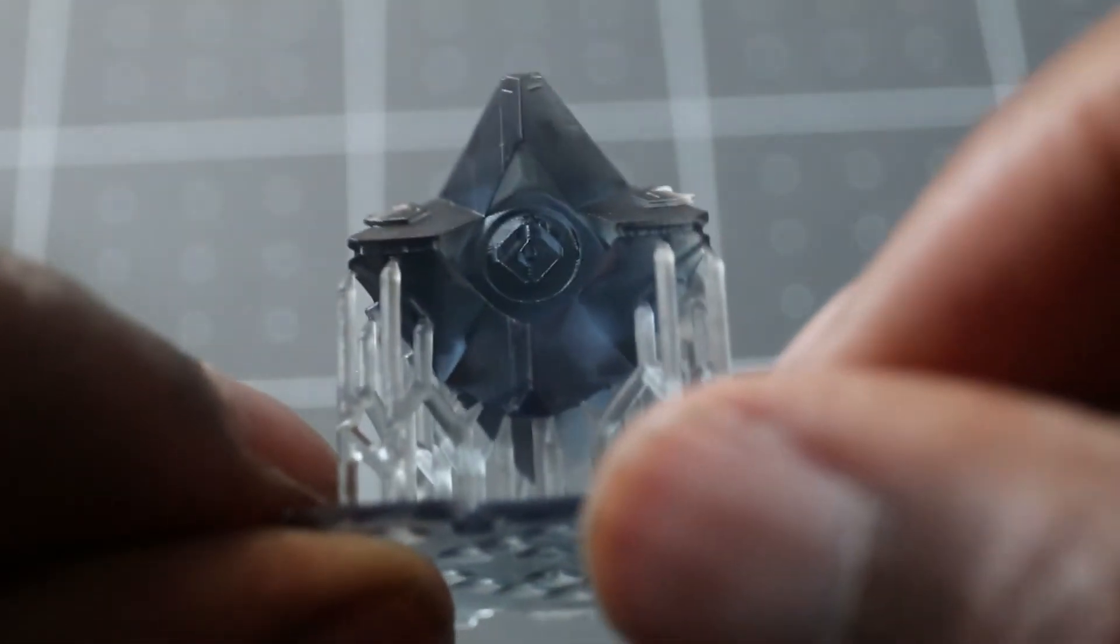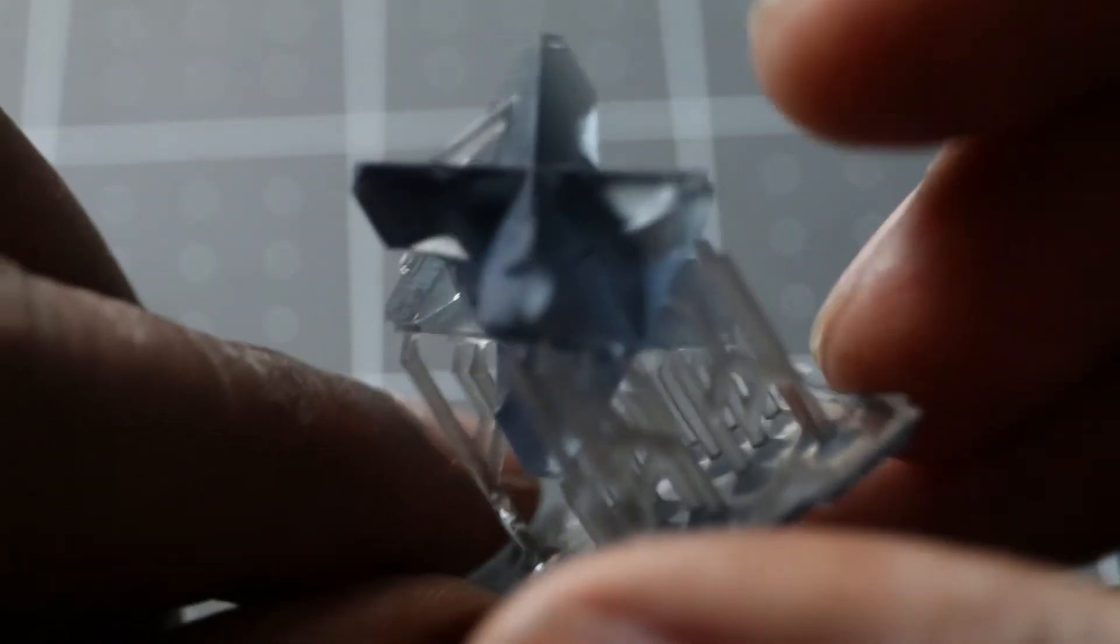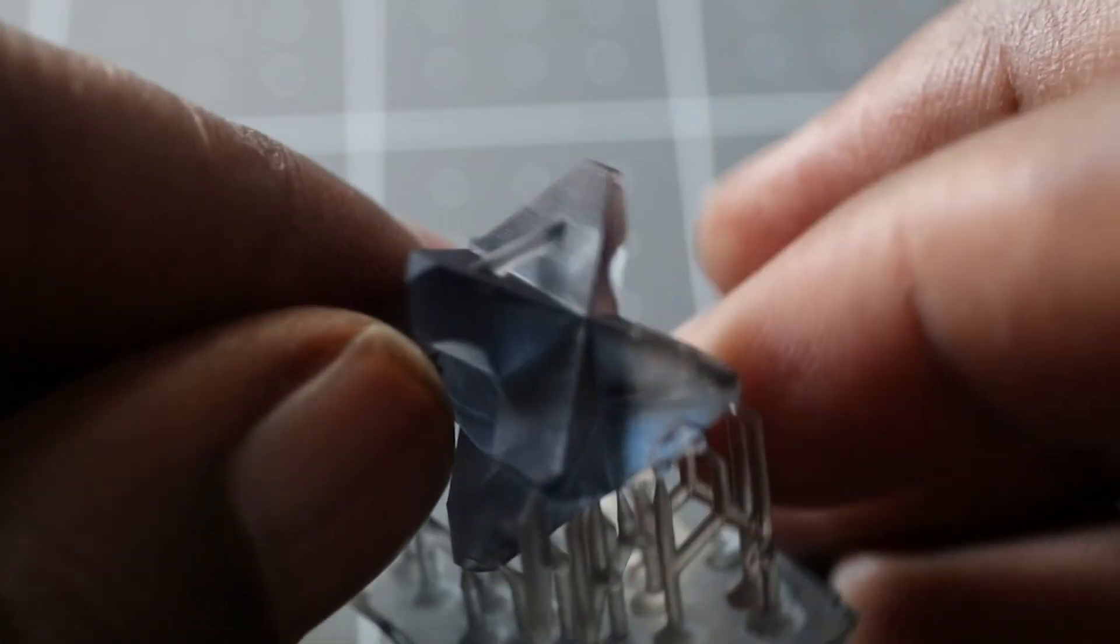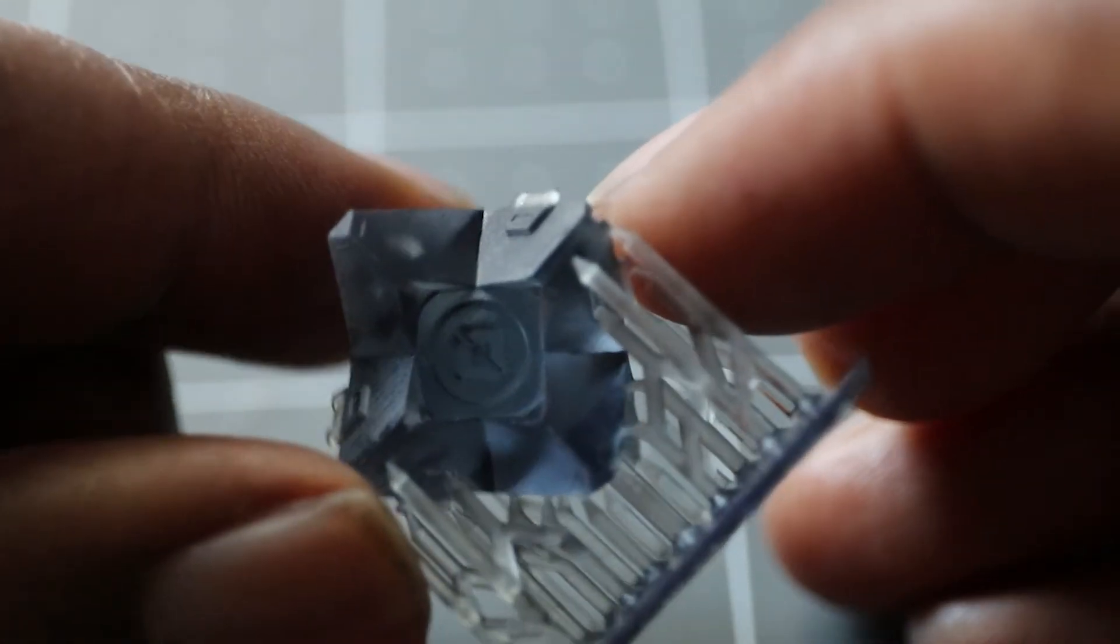Now we're going to take a look at the Ghost pendant from Destiny. Again, very small details all seem preserved. Everything looks smooth. I'm excited, I may paint this one up to see how it turns out. This will be an awesome print to cast in metal I think.